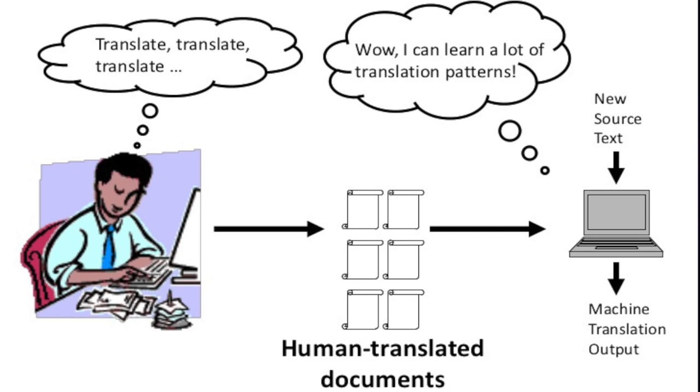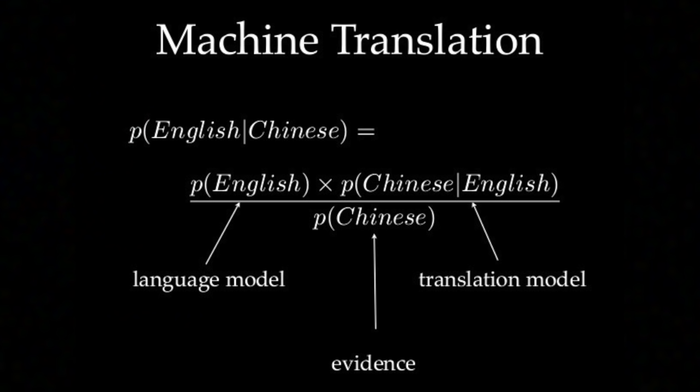A popular approach was to break the source text down into segments, then compare them to an aligned bilingual corpus, using statistical evidence and probabilities to choose the most likely translation.